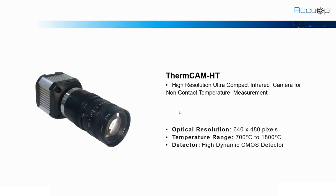This is the Thermcam HD. We are using this camera for high temperature measurement. It has a pixel resolution of 640 by 480 pixels and it can measure temperatures from 700 degrees Celsius to 1800 degrees Celsius.